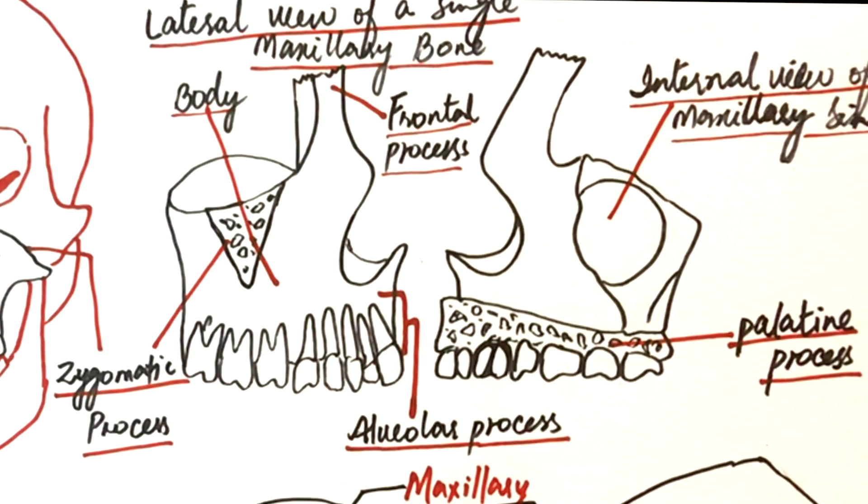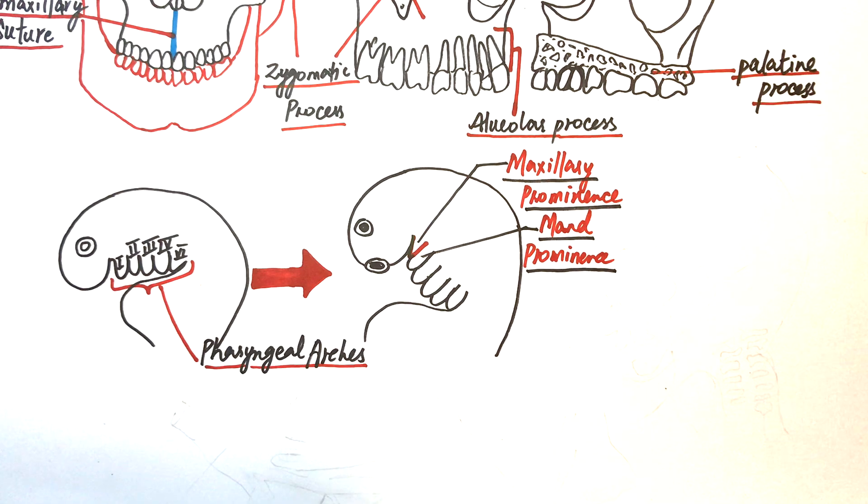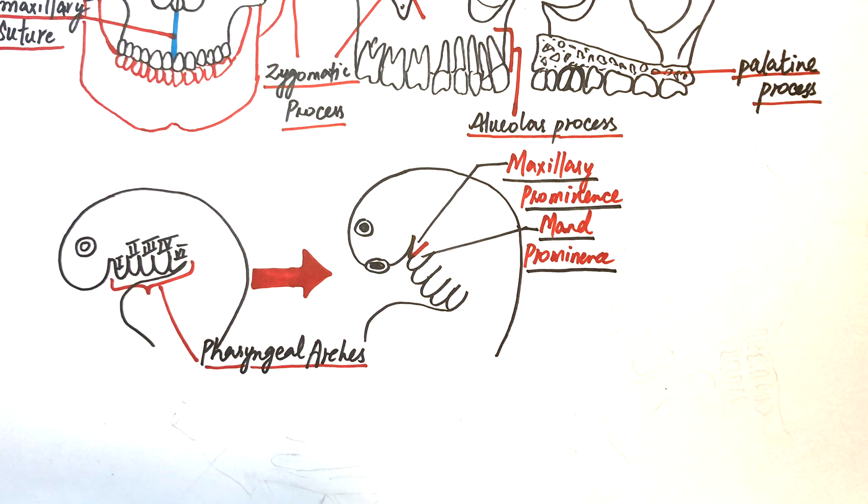The development of the maxilla arises from the first pharyngeal arch called the mandibular arch. The mandibular arch is one of the five pairs of pharyngeal arches present at the neck region of the embryo.